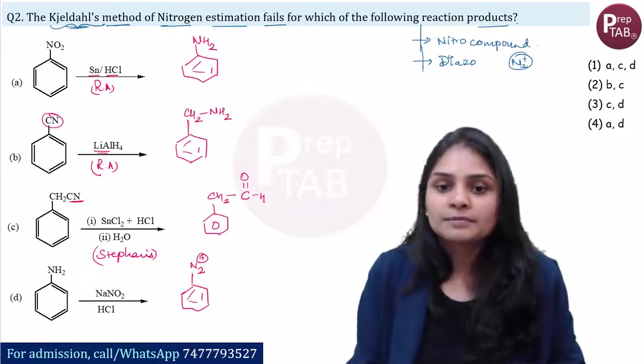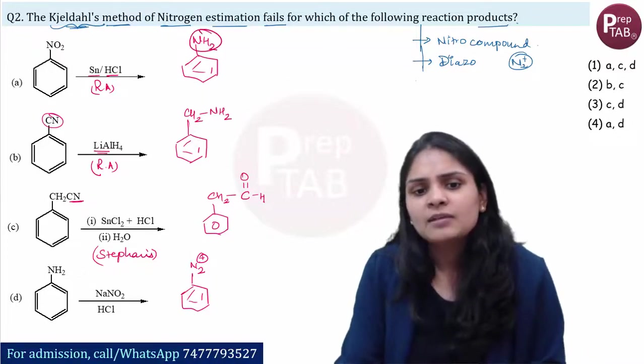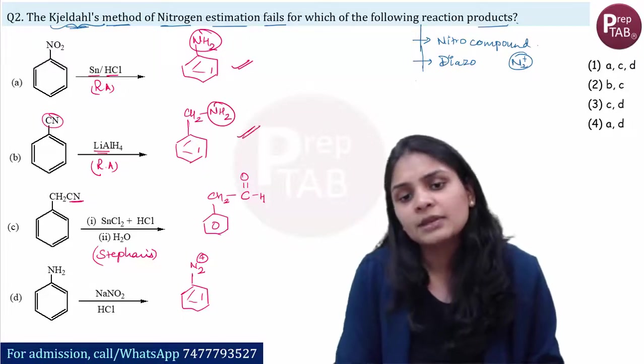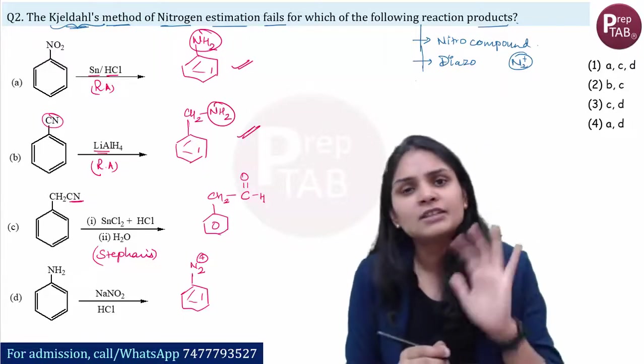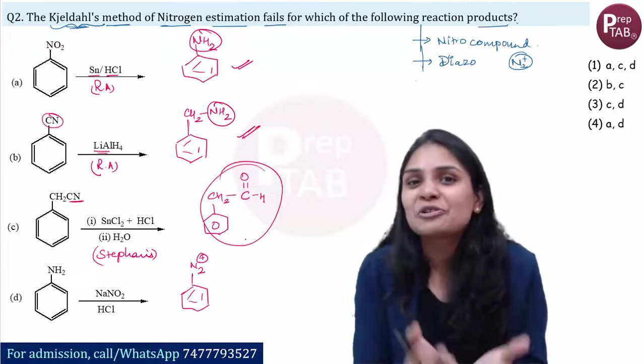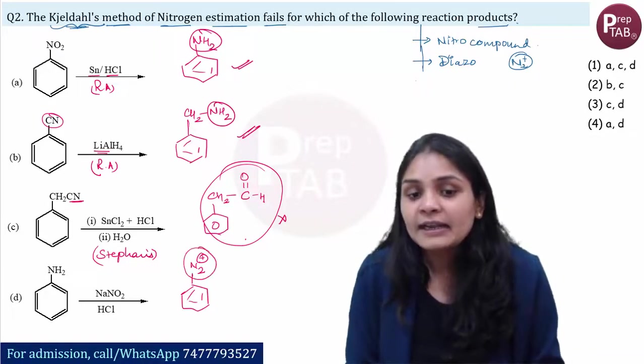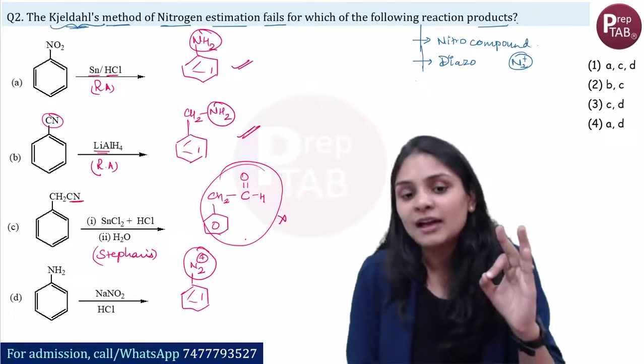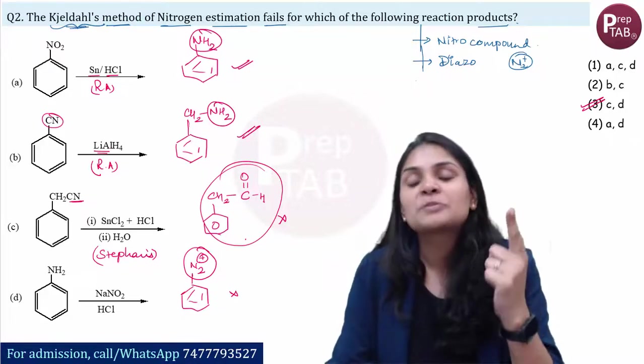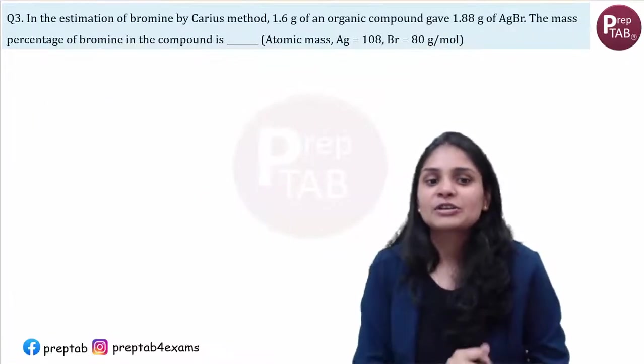Nitrile with HCl and water, this is Stephens reaction, we use aldehyde preparation from nitrile, so nitrile carbon becomes aldehyde. And D is aniline and NaNO2 HCl, you have made diazonium salt. Okay, now see where you can apply. Amine can apply here, here is nitrogen, nitrogen. So this diazo salt will fail, so option 3 is right, simple.